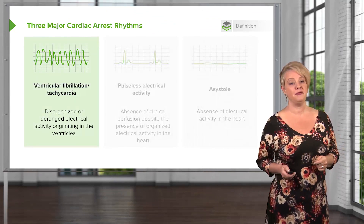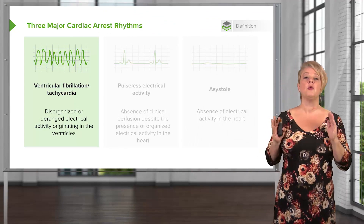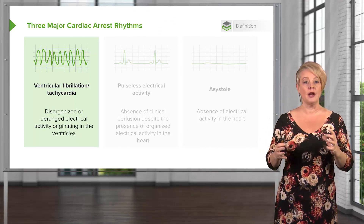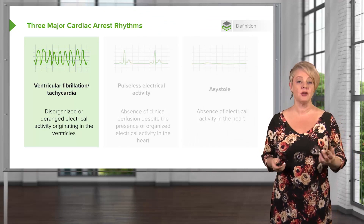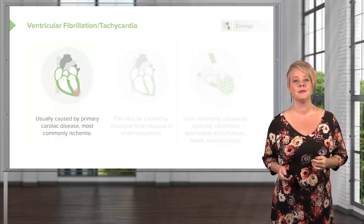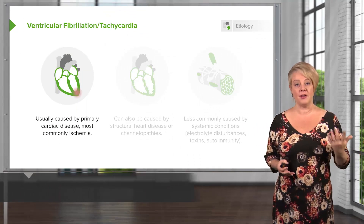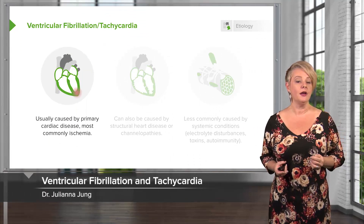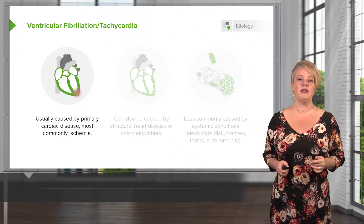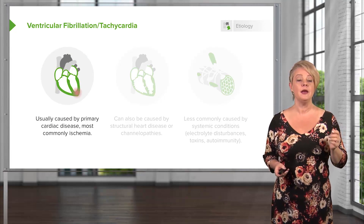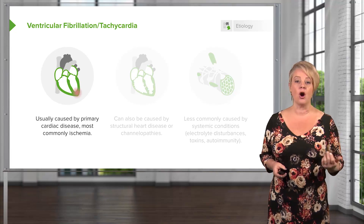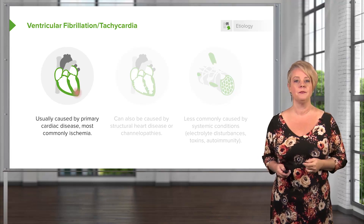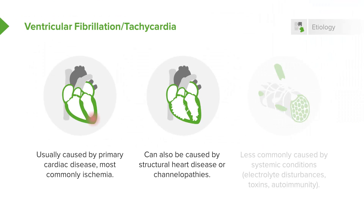Let's start off with V-fib and V-tach. These rhythms both represent disorganized electrical conduction which originates in the ventricles. There are a number of different causes for ventricular fibrillation and tachycardia, but they're most strongly associated with primary heart disease, in particular coronary ischemia — so myocardial infarctions. However, you can also see V-fib and V-tach in the setting of structural heart disease, inherited channelopathies, and other clinical situations.